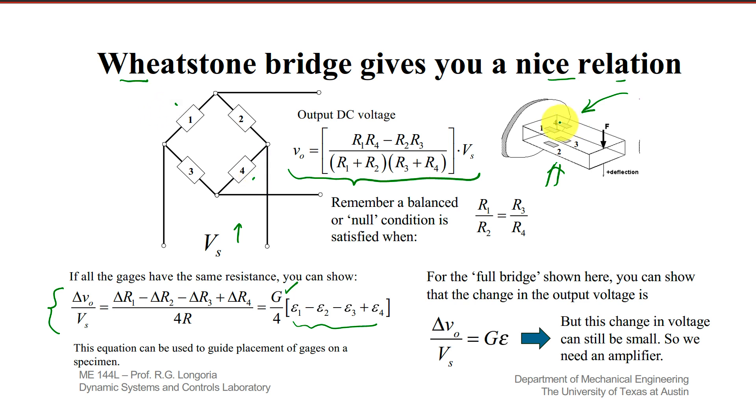So note this very carefully. Gauge one and gauge four are on top here. Gauge two and three are on the bottom, because when you put a tip load on here, the two top ones will be in tension, the two bottom ones will be in compression, just as you would like. The sign of the strain here is negative, the sign of the strain here is positive.